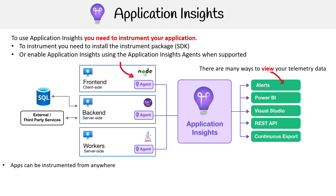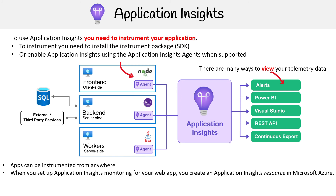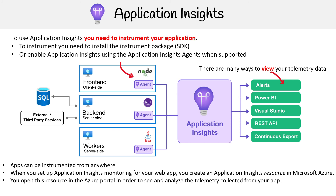Apps can be instrumented from anywhere — if you're running on AWS, you can install it on your servers there. When you set up Application Insights monitoring for your web app, you create an Application Insights resource in Microsoft Azure. You open this resource in the Azure portal to see and analyze telemetry collected from your app. The resource is identified by the instrumentation key, also known as the I-key.